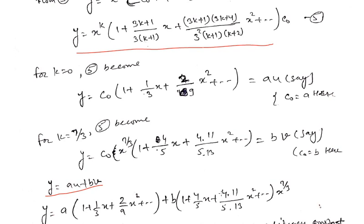This is the Frobenius method for the first case, when the roots of the indicial equation are unequal and not differing by an integer. In this way we find the series solution. Thank you.